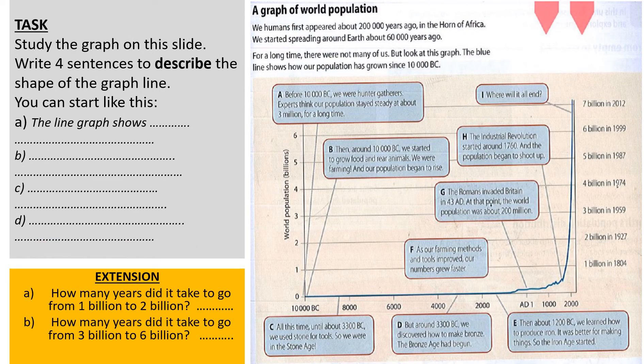In geography we always like to look at data and graphs, and this is a really important graph you'll probably see a lot over the next few years of geography lessons. It shows world population — you can look through labels A to I and think about what each is showing. Along the x-axis at the bottom it shows the year, going back to 10,000 BC, and up the y-axis it shows world population in billions.